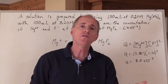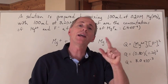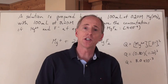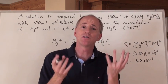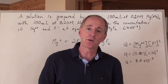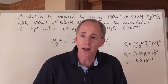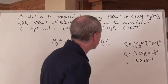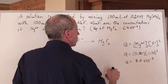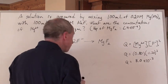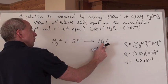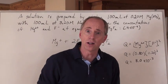Q = 8×10⁻³ is greater than Ksp = 6.4×10⁻⁹. When the Q value is greater than the K value, that means you've got a situation where a precipitate is going to form. So when Q > K, you have precipitation — magnesium ions are going to bond with fluoride ions in solution to make magnesium fluoride solid.